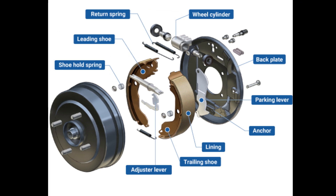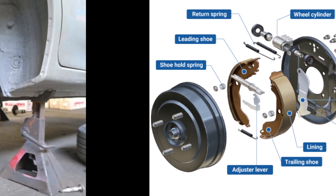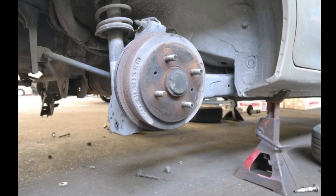Drum brakes. Although less common on newer models, drum brakes are still used on many vehicles, especially on the rear wheels. They consist of a drum that rotates along with the wheel and shoes that expand to press against the inside of the drum, creating friction. They are cheaper than disc brakes but have less efficient heat dissipation, which can be a problem in heavy use.